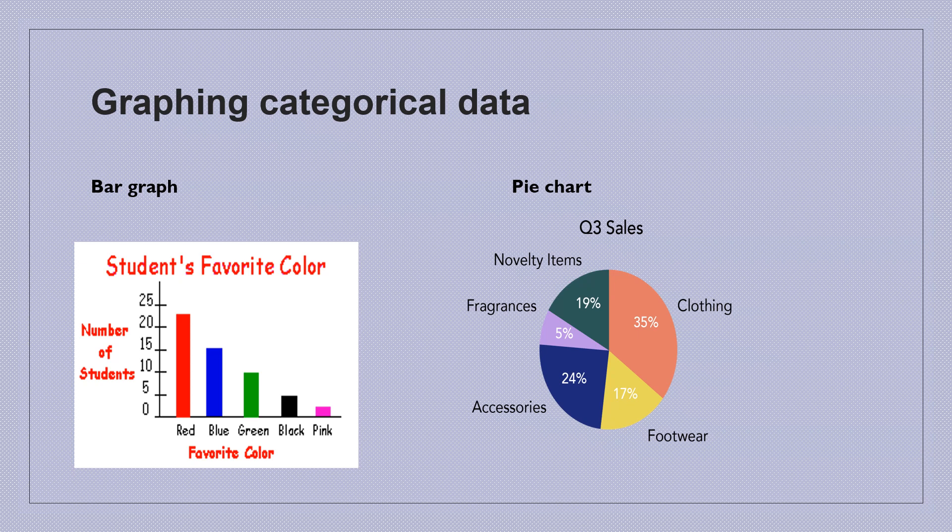Or we can also have a pie chart as shown in this diagram. We have the sales in different categories: clothing, footwear, accessories, fragrance, etc. These are all the different categories for the individual sale, and that will be a graphical representation for categorical data.